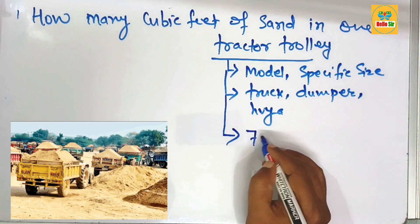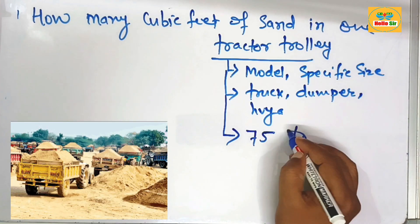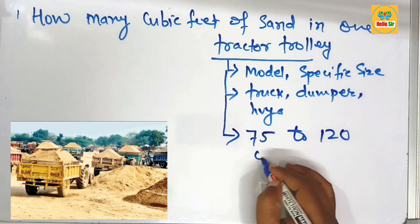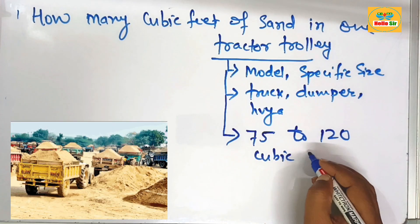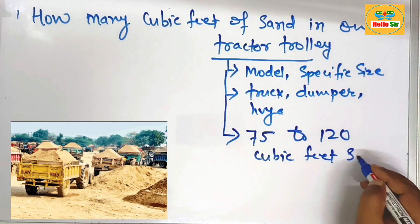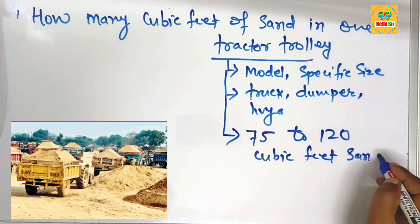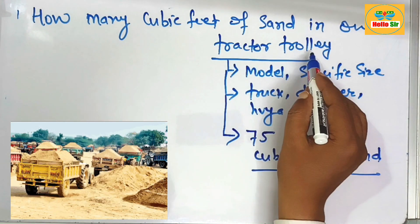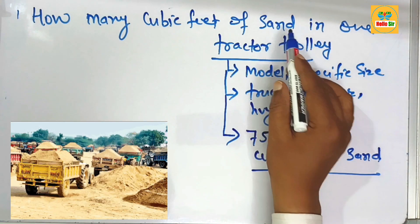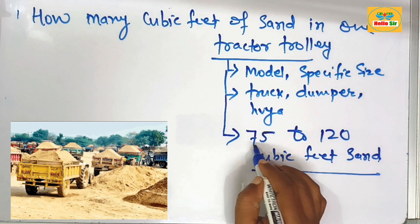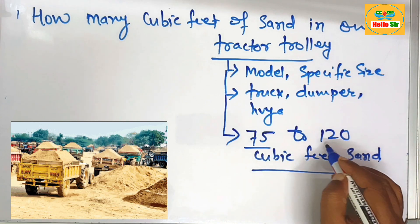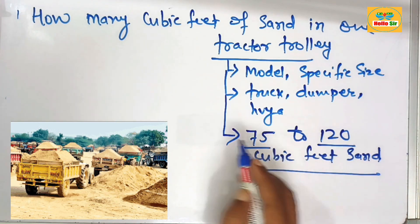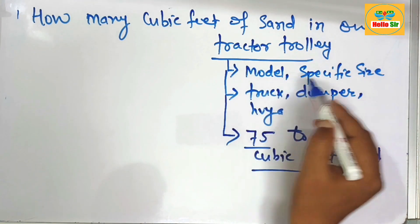Generally, one tractor trolley can hold about 75 to 120 cubic feet of sand material. This is the capacity of one tractor trolley for sand material — it carries about 75 to 120 cubic feet of sand.